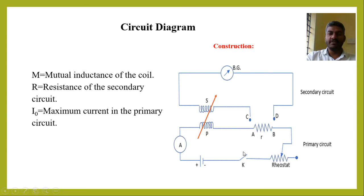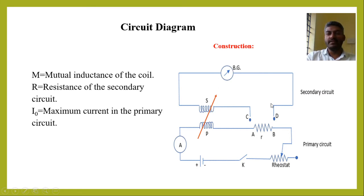If I close the key, then this circuit will be closed. In the secondary circuit, it has a secondary coil and a ballistic galvanometer. The secondary circuit is initially open.